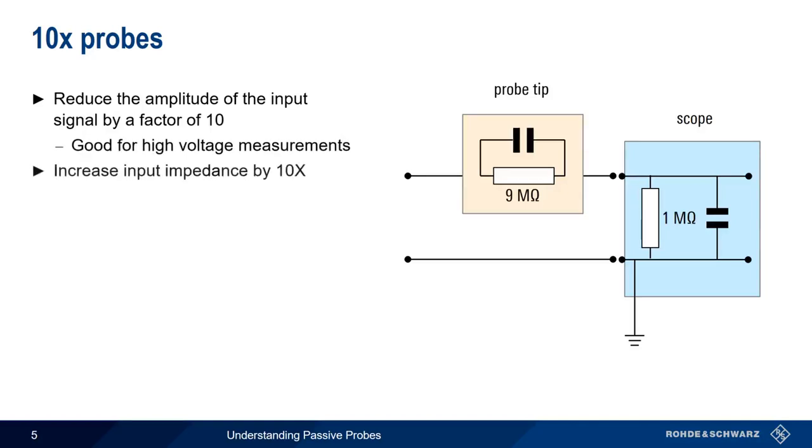The added attenuation also increases the scope input impedance by a factor of 10, so 10x probes create less circuit loading than 1x probes.